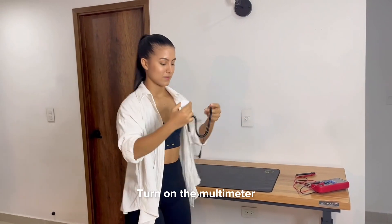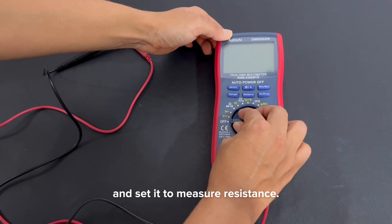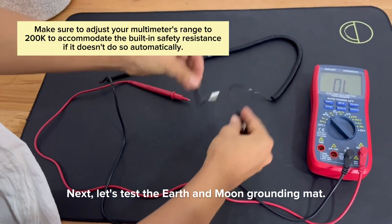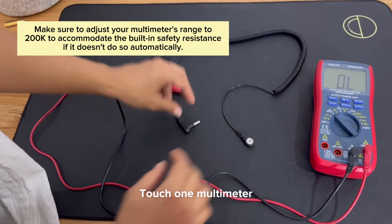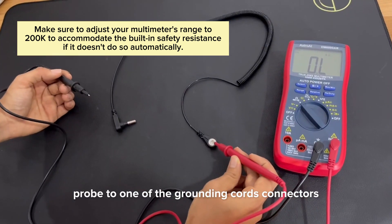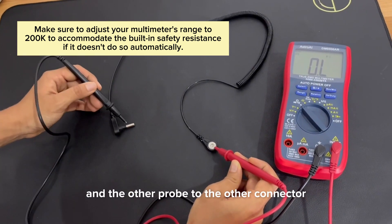Turn on the multimeter and set it to measure resistance. Next, let's test the Earth and Moon grounding mat. Touch one multimeter probe to one of the grounding cord's connectors and the other probe to the other connector.